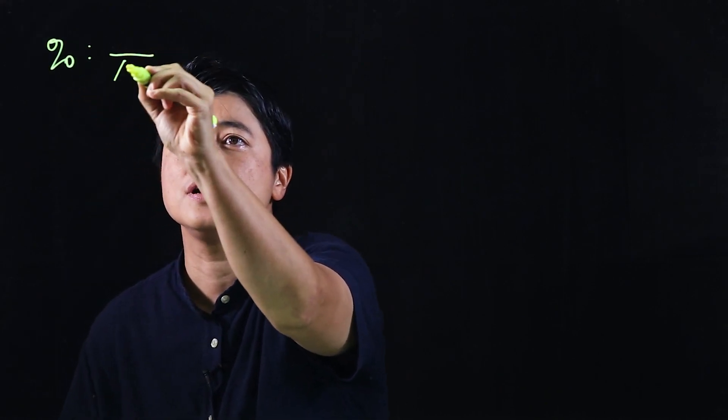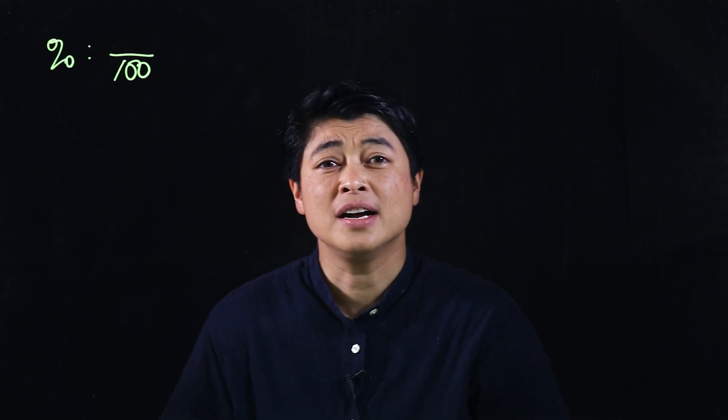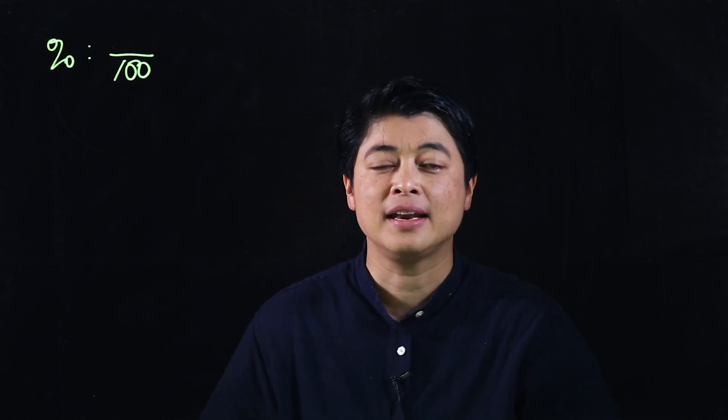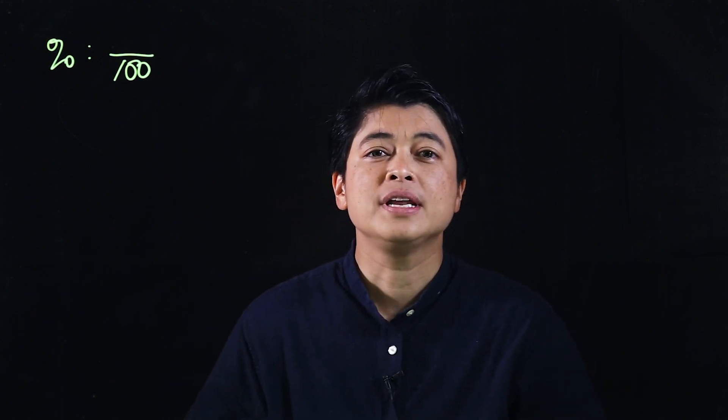Chapter 10 lesson 2 is about percentages as fractions and decimals. In the last lesson we learned that percent is over 100, which means if it's over 100 it can be written as a fraction.